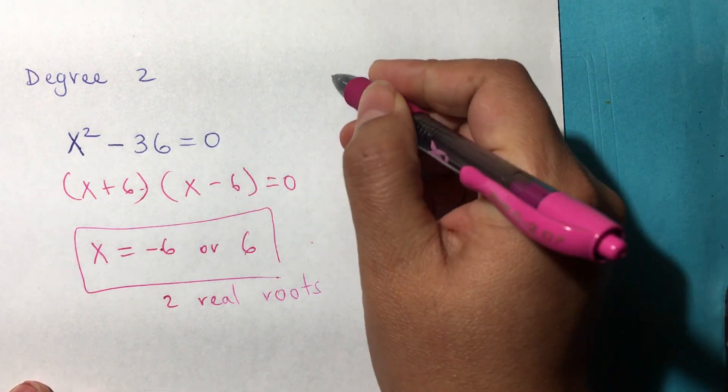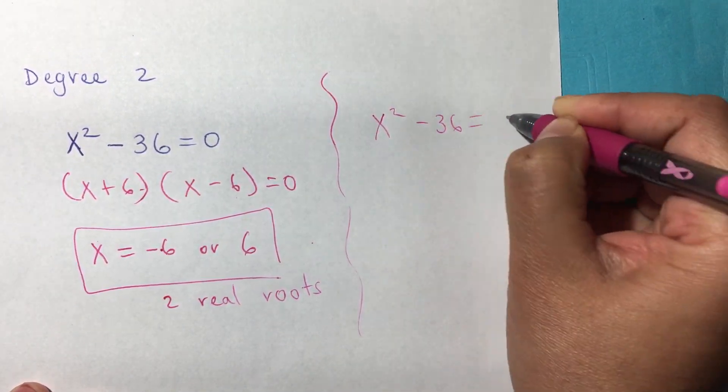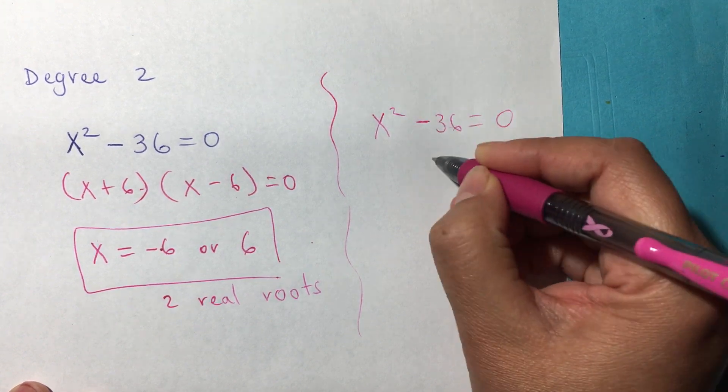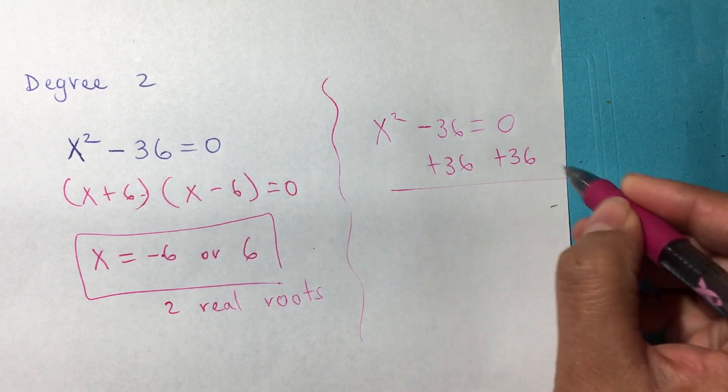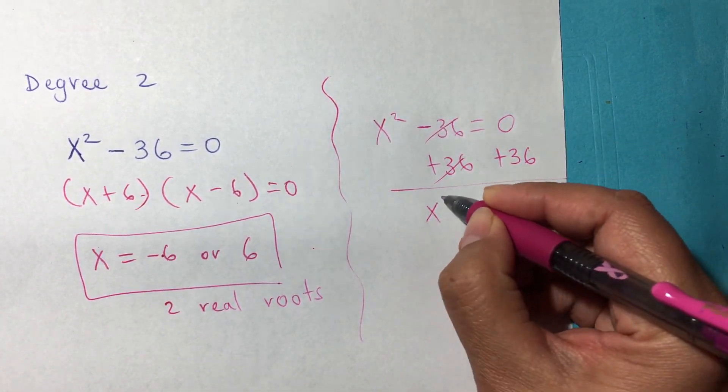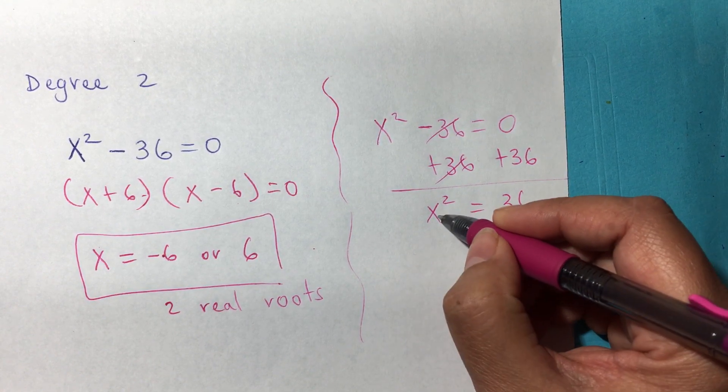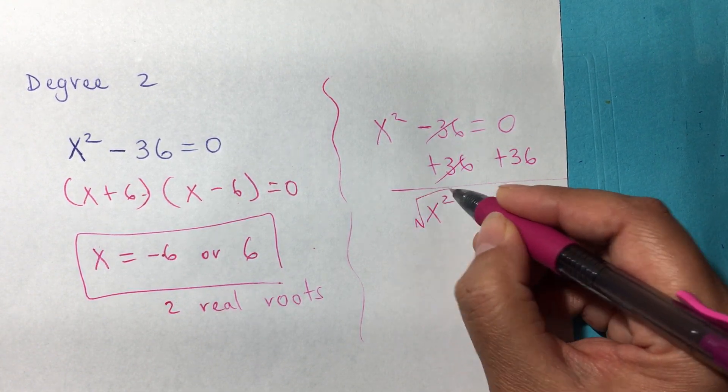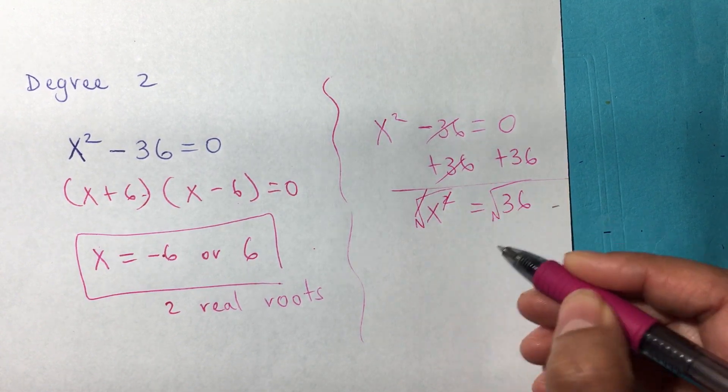I forgot I was going to show you a different way. If you have x² - 36 = 0, we can cancel by adding 36 to both sides. You get x² = 36. To get x by itself, take the square root of both sides. This square root cancels the square, and now you only have x.